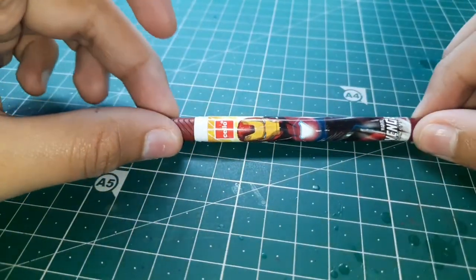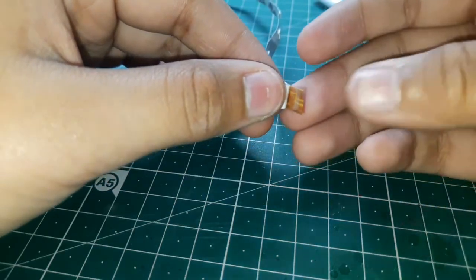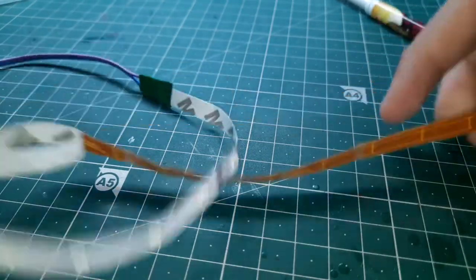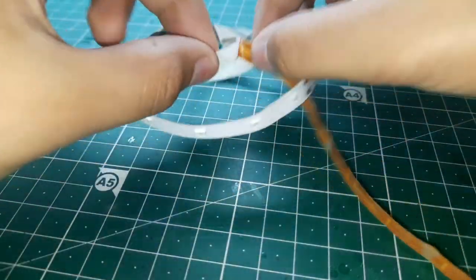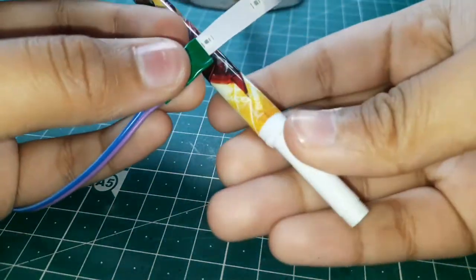Keeping that aside, now let's open the LED strip's backside which would expose the sticky side of the 3M tape. Now we'll wrap it around the pen in such a way.